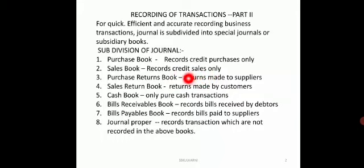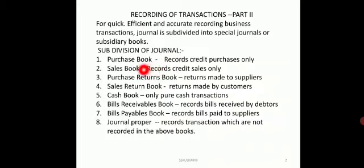Sometimes goods are returned to our suppliers, or customers may return goods to us. These returns may be because of damaged conditions, change in rate, change in quality, or wrong supply of goods. Such returns must be recorded in the books of accounts. If we return goods to our suppliers it is treated as purchase returns; if our customers return goods to us, those are treated as sales returns.